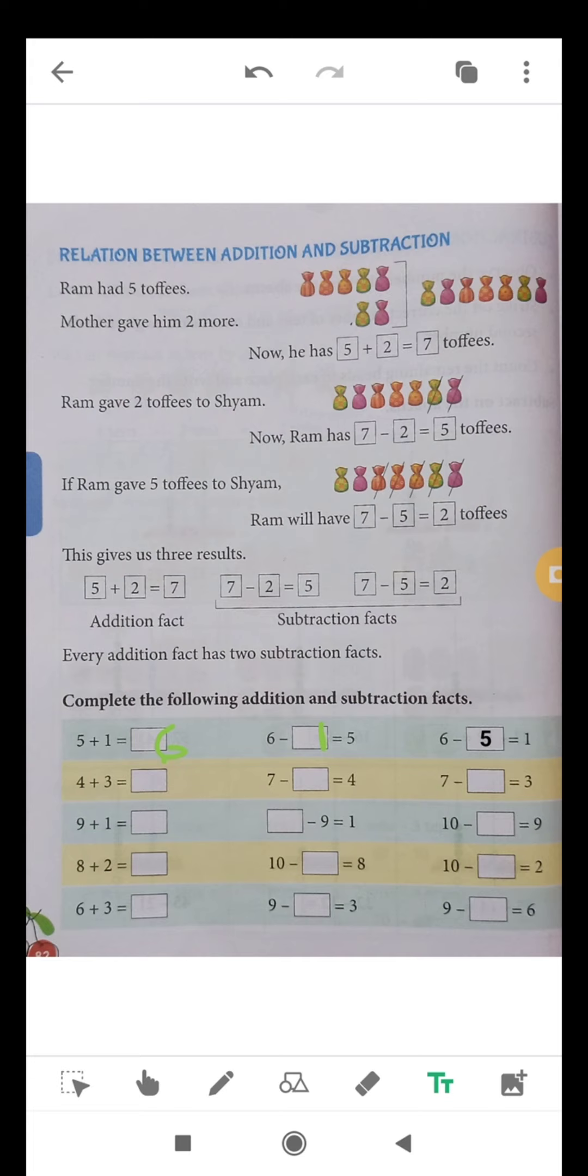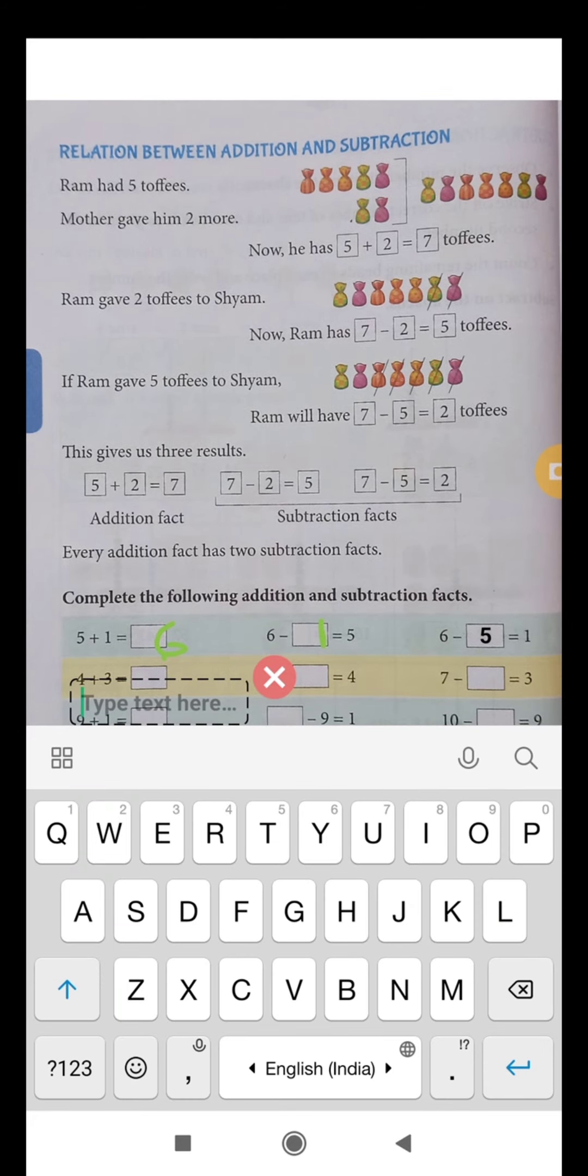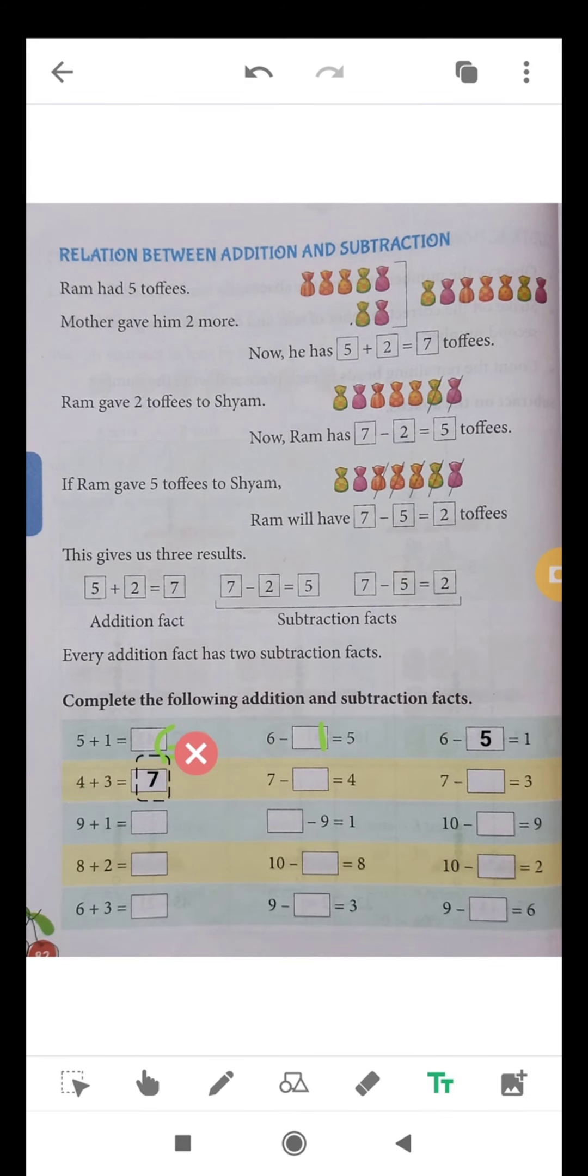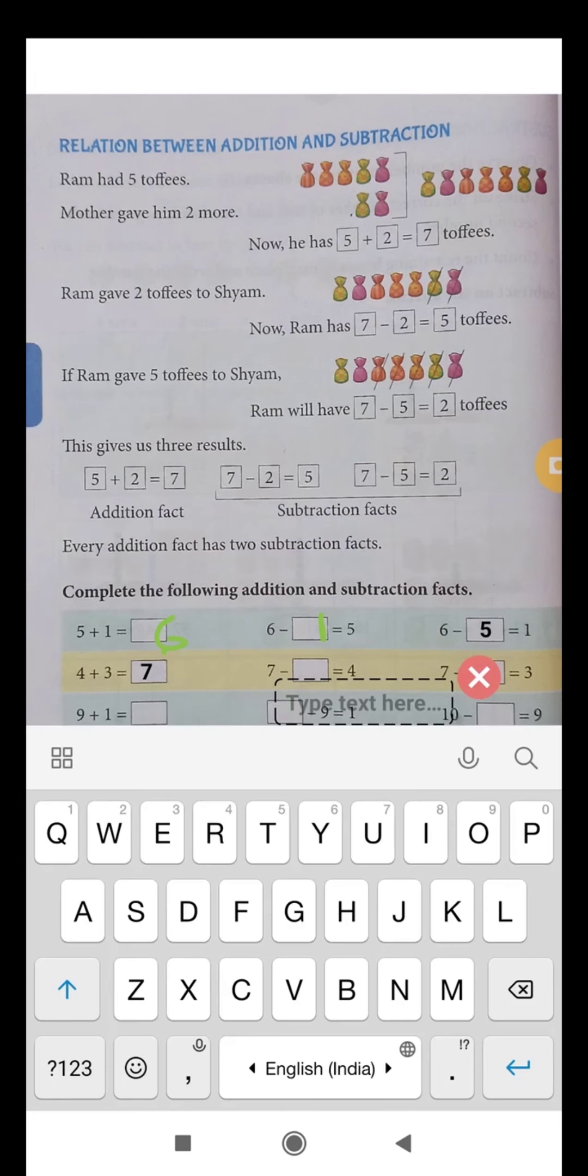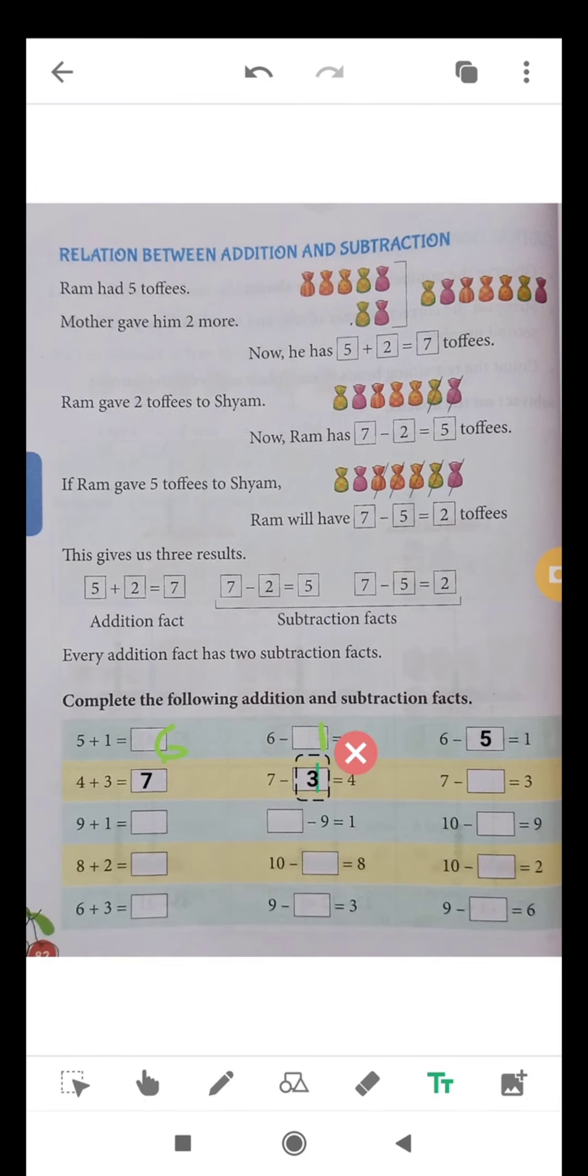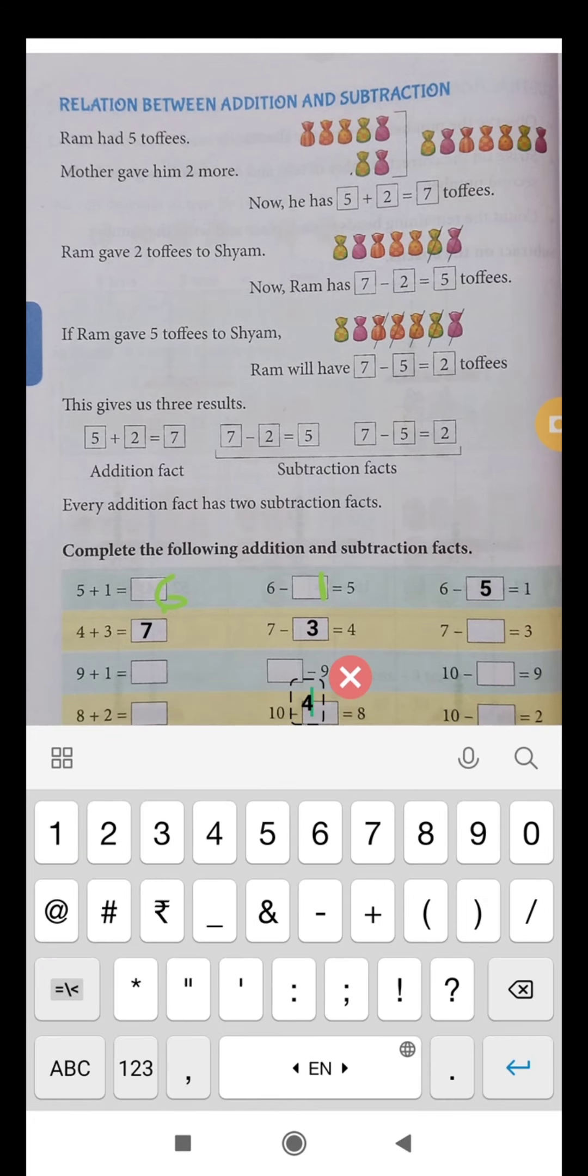Next question: 4 plus 3 equals 7. 7 is 4 plus 3, that is the addition fact. Subtraction facts are 7 minus 3 is equal to 4, 7 minus 4 is equal to 3. 7 minus 3 is equal to 4.